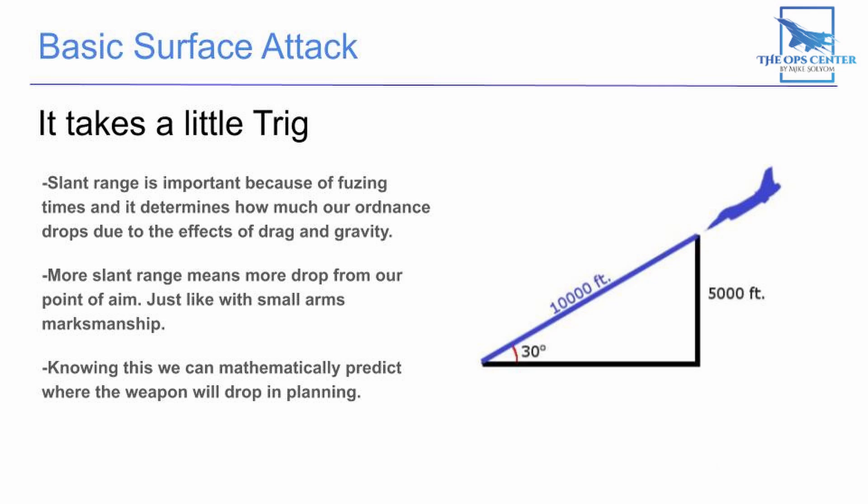If you look at the diagram on the right, you'll see that whenever we're in a 30-degree dive, our slant range to the target is always going to be exactly twice what our altitude is. Different angles will give a different ratio, but this is one that's pretty easy to remember.